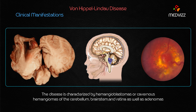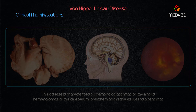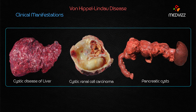Von Hippel-Lindau causes vascular malformations, meaning cystic spaces filled with blood — cavernous hemangiomas seen in the cerebellum and brainstem. Hemangioblastomas are also seen in the retina, as well as adenomas and cysts of the liver, kidney, and pancreas.